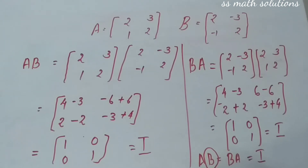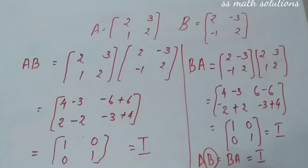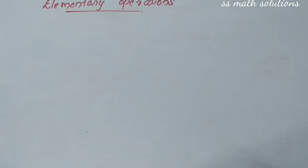Here we are proceeding with questions by using the elementary operation. The concept behind the inverse of a matrix is: if A times another matrix results in the identity matrix, then that other matrix is the inverse. Elementary operations means interchanging rows or columns, or adding rows and columns by some basic properties — just adding, separating, or scalar multiplication.